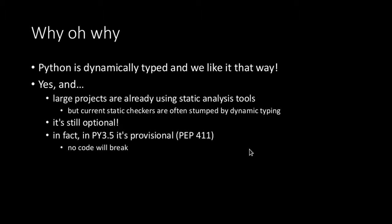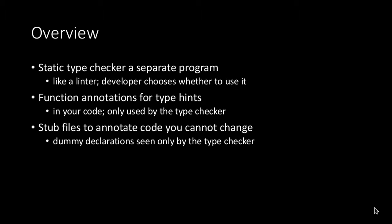This is provisional, and there are two PEPs: 484 and 411. You can use type hints wherever you want and not use them wherever you don't want to. It really is optional — just add it where it makes your code better. And if you don't want or think it's inappropriate, don't use it. You'll see some examples where it's very difficult to use type hints.